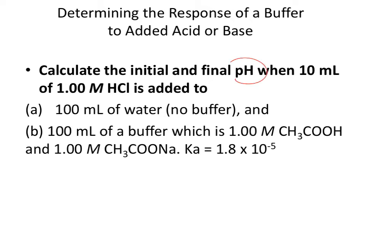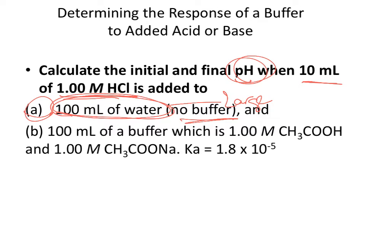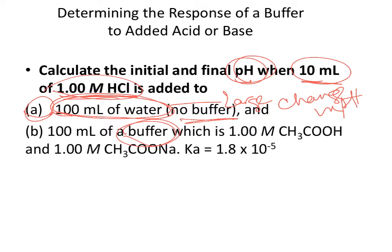The problem asks you to calculate pH when 10 mL of 1 molar HCl is added to pure water (Part A) versus to a buffer system (Part B). In Part A there's no buffer, so you expect a large change in pH. Pure water starts at pH 7, and we'll calculate the new pH after adding the HCl.